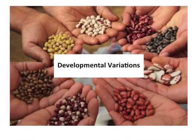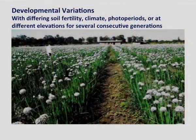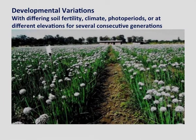The first cause is developmental variations. Basic variations in plant characters could develop and may set in as differential growth responses if the seed crop is grown under environments with differing soil fertility, climate, photoperiods, or at different elevations for several consecutive generations. It is therefore preferred to grow the varieties of crops in areas of their natural adaptation to minimize developmental shifts.